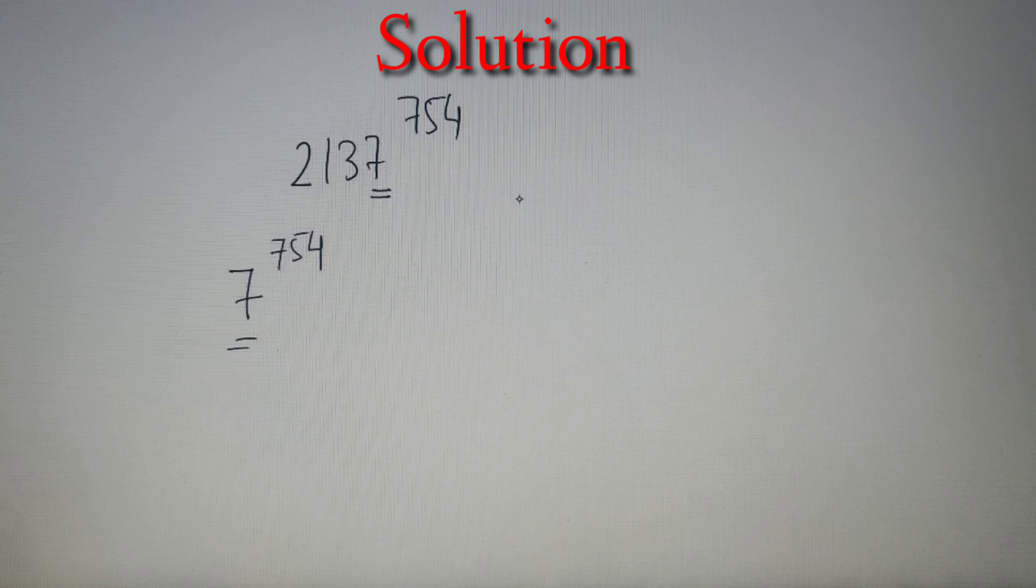So the cyclicity of 7 is 4 because 7 raised to the power 1 is equal to 7, 7 raised to the power 2 is equal to 49, 7 raised to the power 3 is equal to 343 and 7 raised power 4 is equal to 2401.